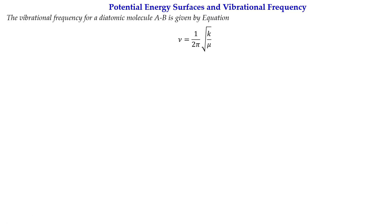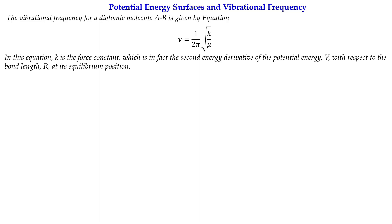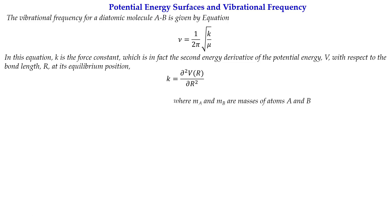Molecules can vibrate, and these vibrations can be determined using infrared spectroscopy. The vibrational frequency of a diatomic molecule can be expressed by the simple equation: ν = 1/(2π) √(k/μ), where k is the force constant, which is the second energy derivative of the potential energy V with respect to bond length r at the equilibrium position: k = ∂²V/∂r².